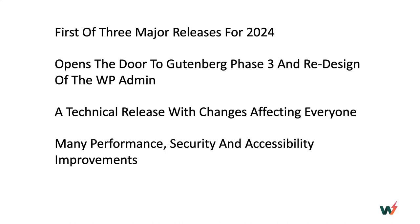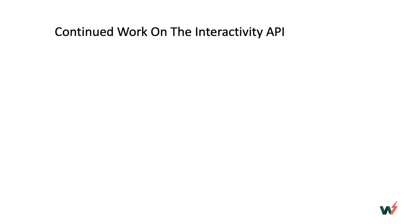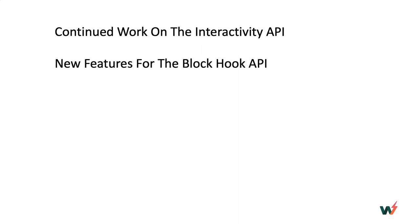For you developers, there are many changes that you can hook on to. There is continued work for the Interactivity API, which was first introduced in WordPress 6.4. What's great about this API is that it enables dynamic interactions like shared data across various blocks without having to reload pages.